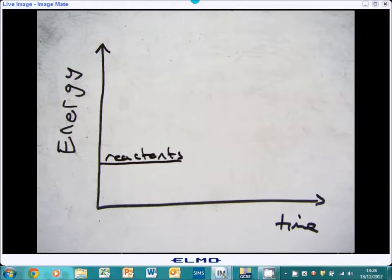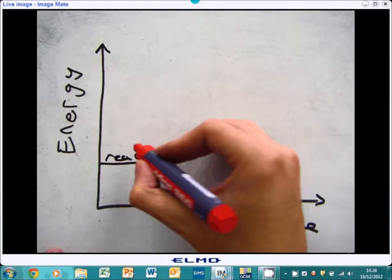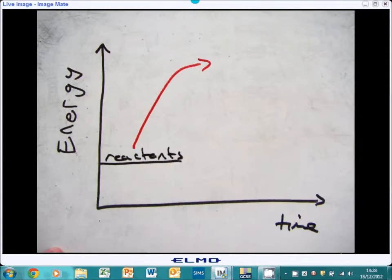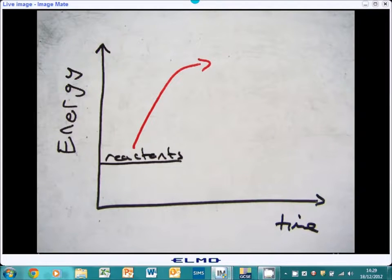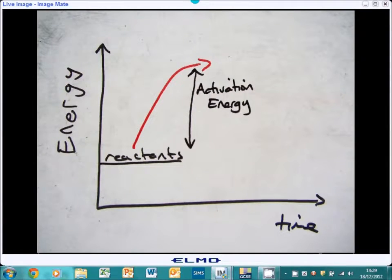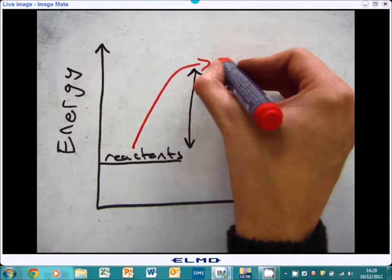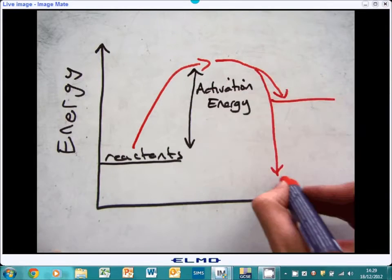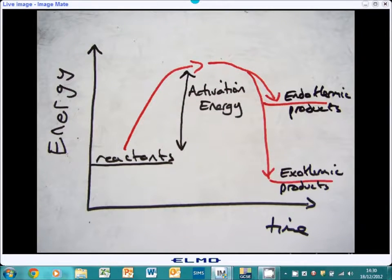If we look back to energy diagrams, remember energy is needed for any reaction to occur. This is an endothermic process. And this is your activation energy, the energy required for any reaction to occur. And then afterwards, you have your products forming, which can either be endo or exothermic.